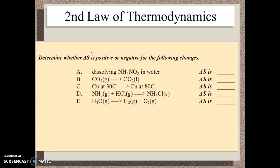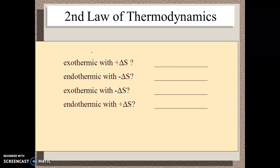Go ahead and answer these questions. We want to put a sign indicating whether entropy is increasing or decreasing for each of these examples. Then for four other scenarios that tell you about the enthalpy change and the entropy change, indicate on the line whether the reaction will be spontaneous — yes, no, or maybe.